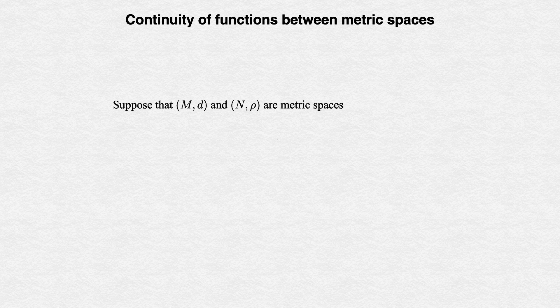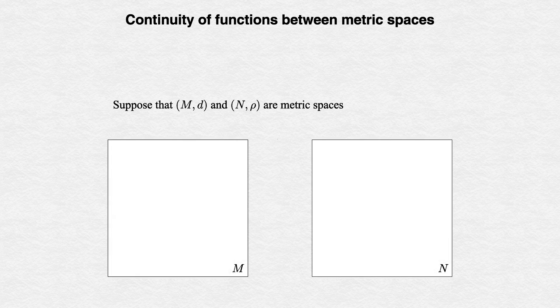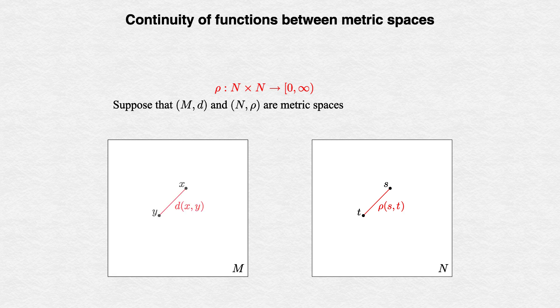To talk about a function between metric spaces, we need two metric spaces: one for the domain and one for the codomain. While they could be the same metric space, we want to make the most general definition possible, and thus one that's the most widely applicable. So suppose that (M, d) and (N, ρ) are metric spaces. Each has its own set and its own metric. ρ measures distances between points in N, just as d measures distances between points in M. The metrics could be different even if the two sets are the same.